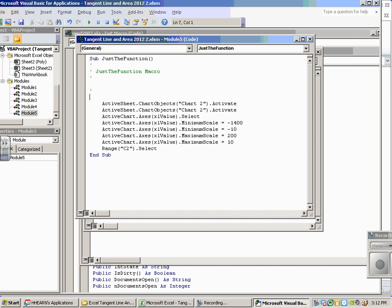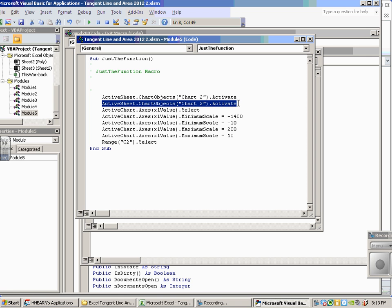Now, to be honest, this range C2 select isn't important, but then I have, I selected a chart, and your chart might not be chart two. Mine just happened to be named chart two. Yours could be one or three or some other number. Don't worry about that.